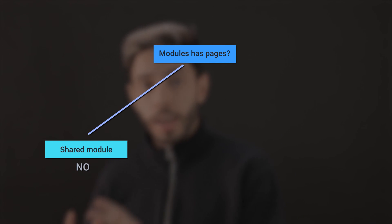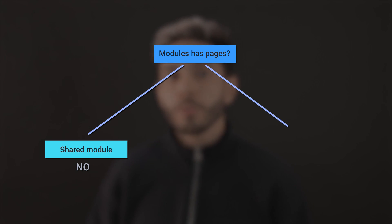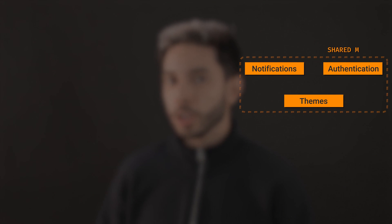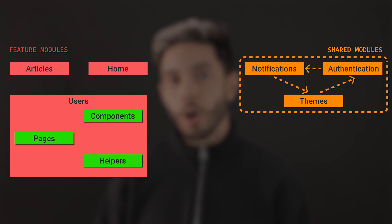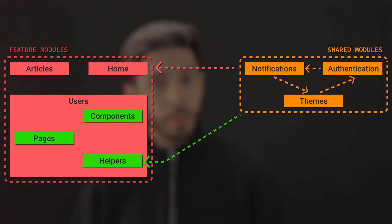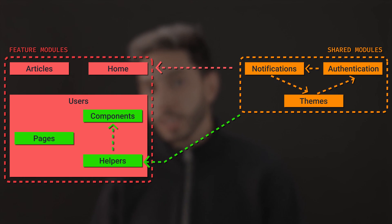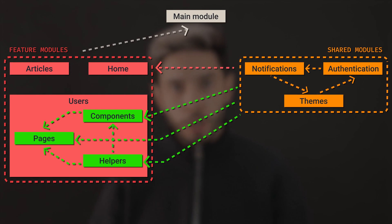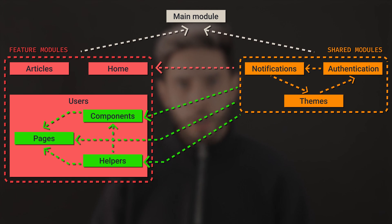So everything is divided into modules. If a module doesn't have pages, it's a shared module and goes to shared. If it does have pages, it's a feature module and has its own folder in the root structure. Then we have the main module, which imports all the feature modules and registers the routes. For that folder structure to work, we need to respect the dependency flow: shared modules can only import from other shared modules, feature modules can only import shared modules, helpers can only import shared modules, pure components can only import helpers and shared modules, and the main module can import anything. Also, all files and modules can import regular node modules. If you don't respect the dependency flow, you will have circular dependencies and everything will break.